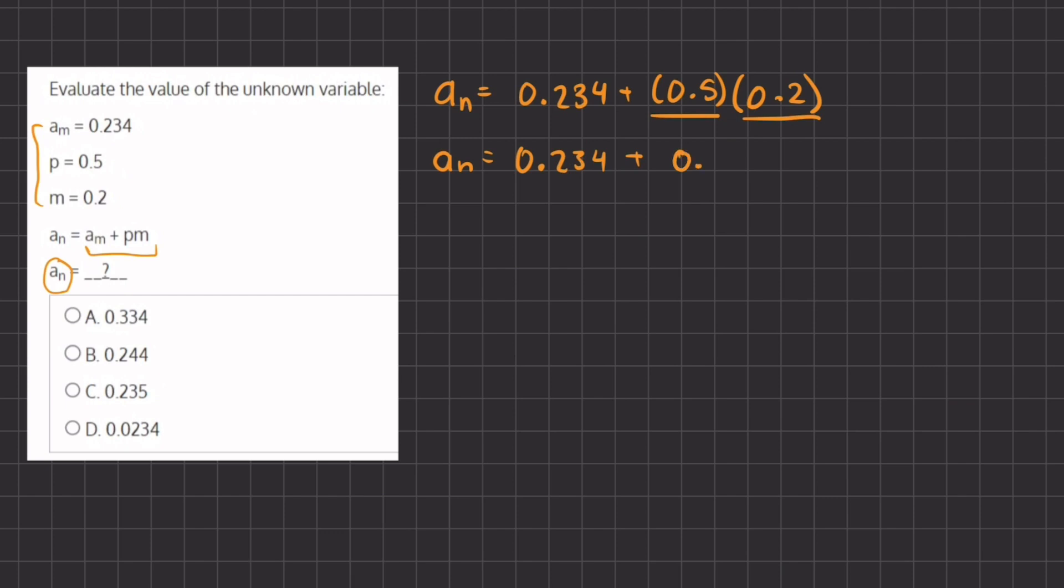which gives us 0.1. Now if you don't remember how to multiply decimals, you can also stack them up like this, and it is a simple long multiplication problem, and you can easily find the answer of 0.1.